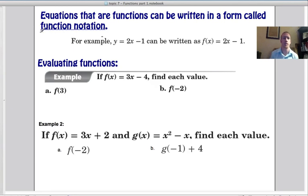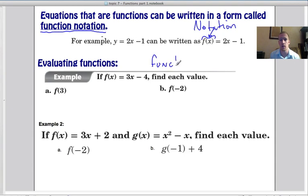So function notation. For some reason, this trips people up and gives people a really hard time. But it's actually wicked easy. Okay? So, for example, y = 2x - 1 can be written as f(x). This is just notation. This is just notation, meaning it's just a different way of writing it. That's all it is. It's just a different way of writing it. So we call our function, this is like a function name. F is our function name.